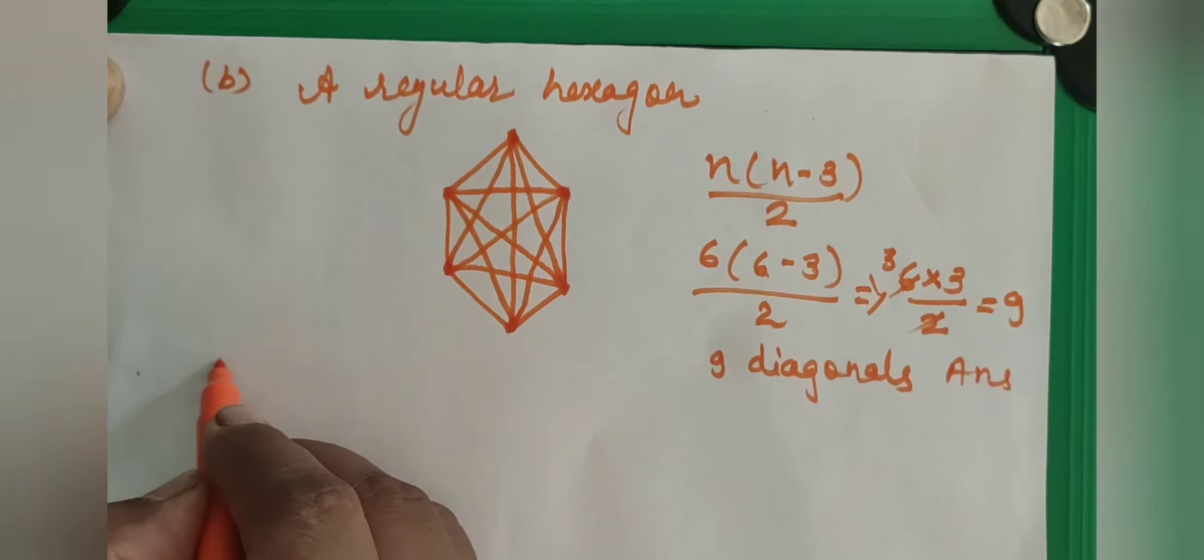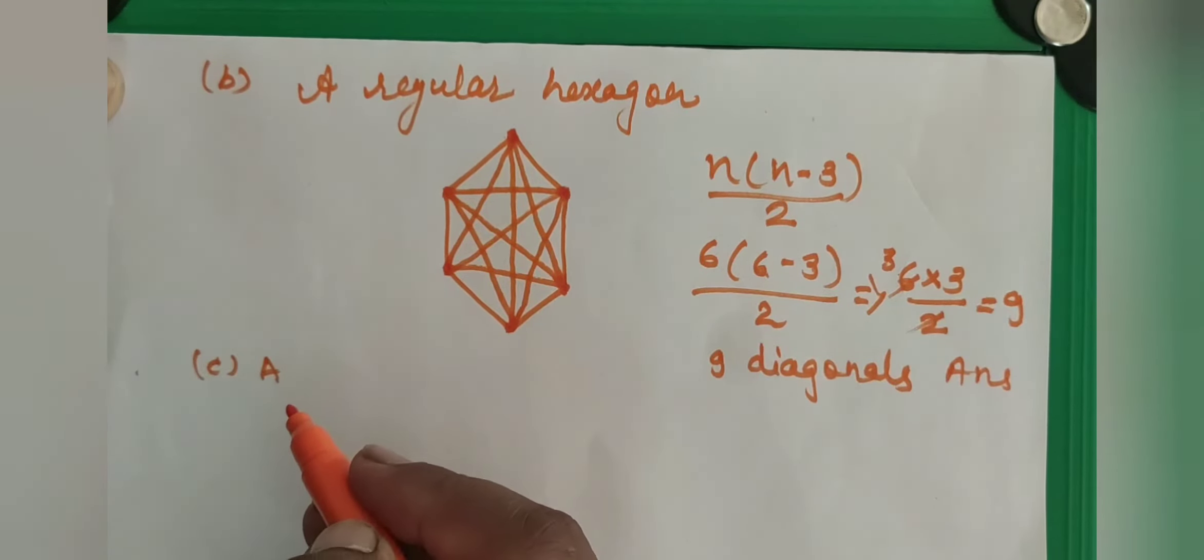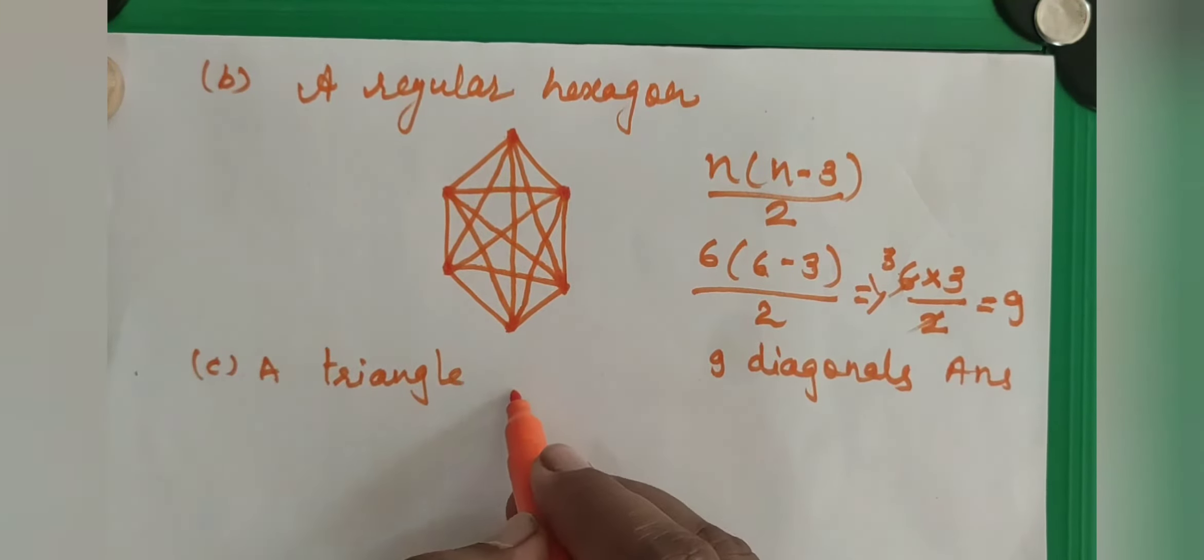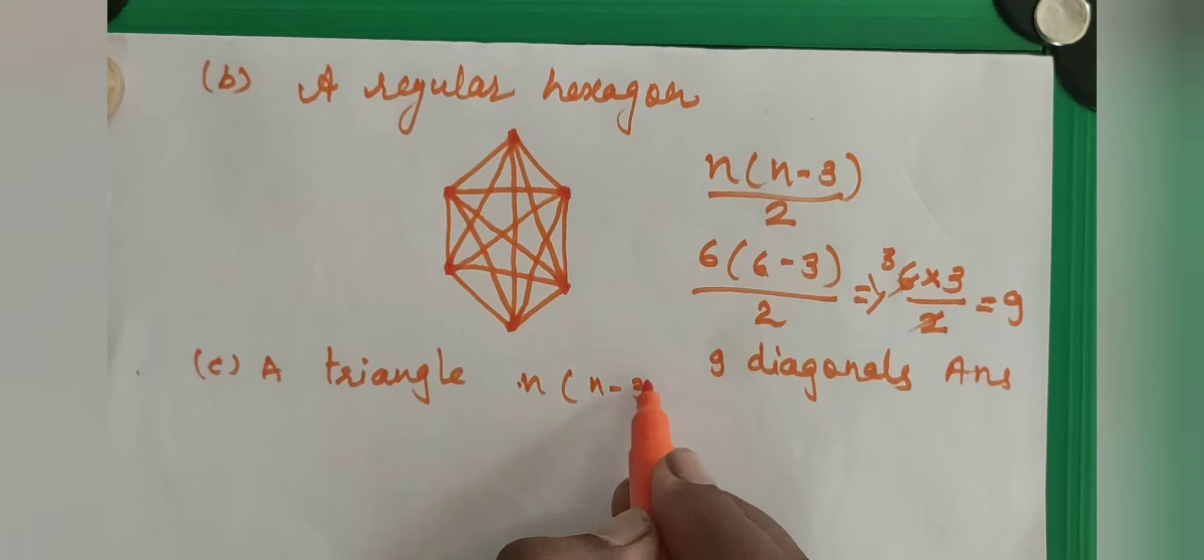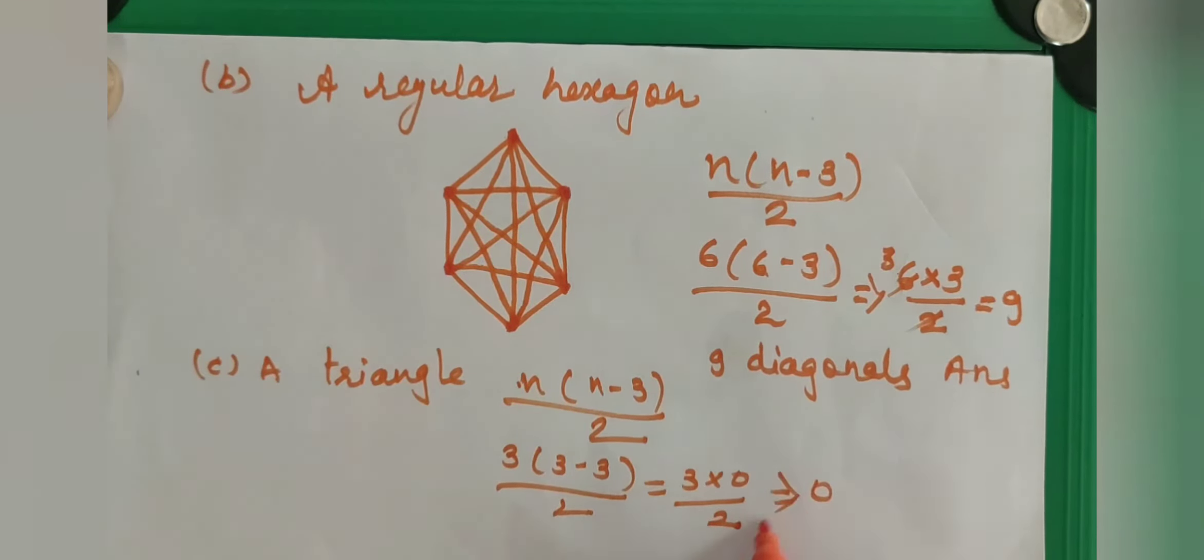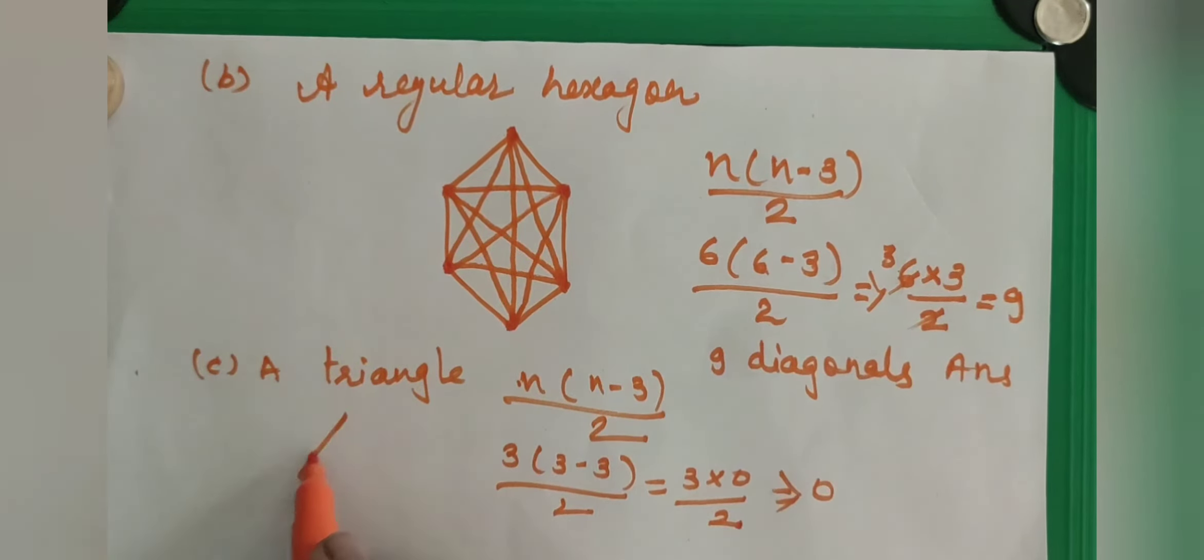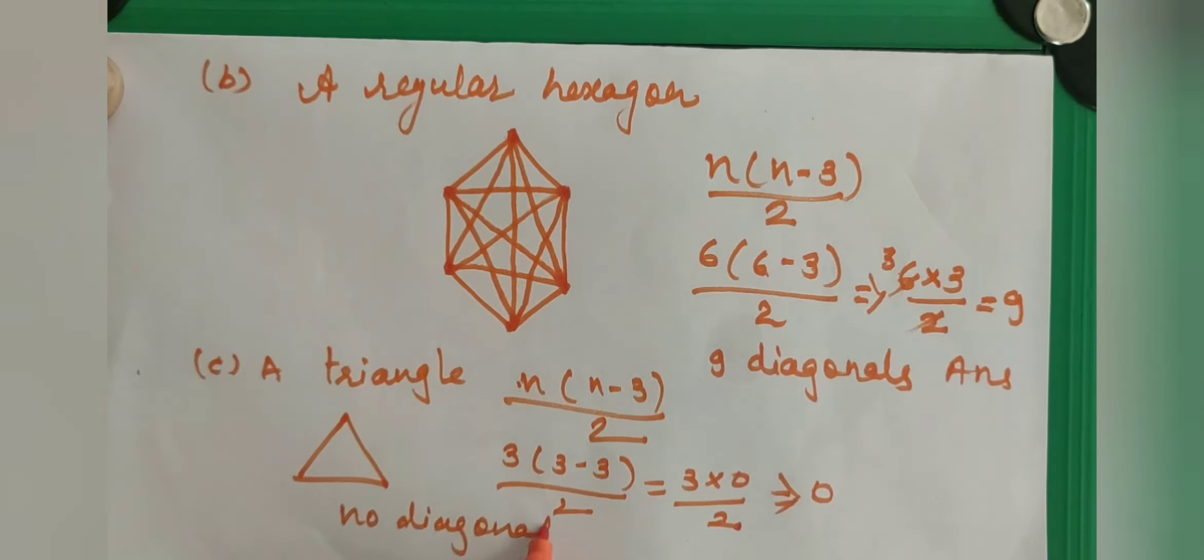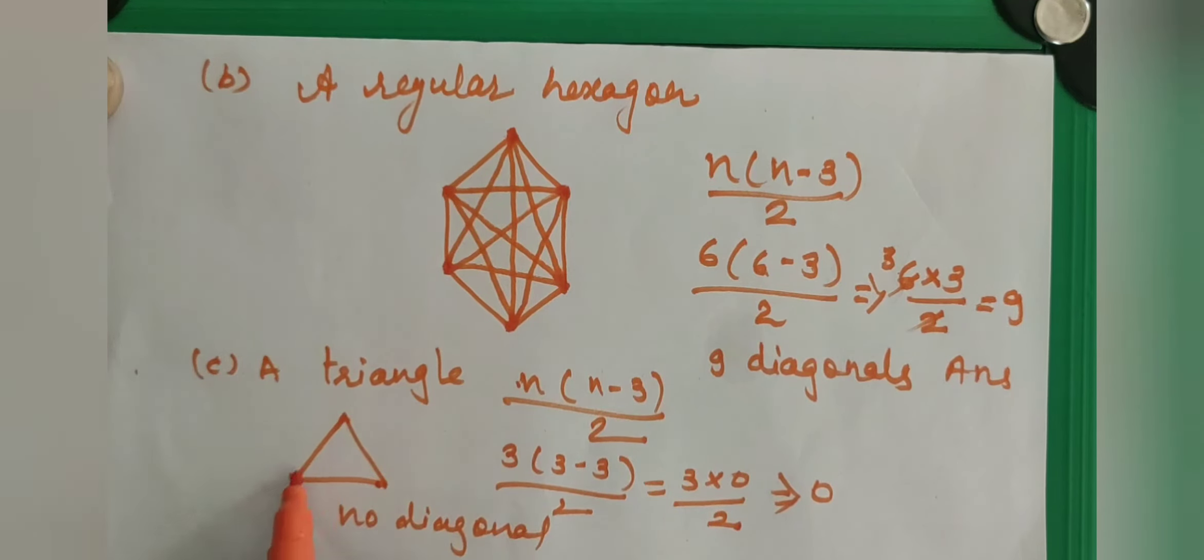And the third sum is a triangle. So how many diagonals does a triangle have? So again we will put the formula n(n-3)/2. So 3(3-3)/2. Here we will get 3 into 0 upon 2. So what answer we got? 0. So triangle has no diagonal. Why? Because you see all the vertices are consecutive to each other. There is no any non-consecutive vertices to join or to draw a diagonal.